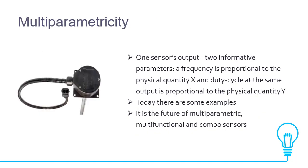Multiparametricity means one sensor output provides two informative parameters. Frequency is proportional to the physical quantity S, and the duty cycle at the same output is proportional to the physical quantity Y. This is a feature of multiparametric, multifunctional, and composite sensors.